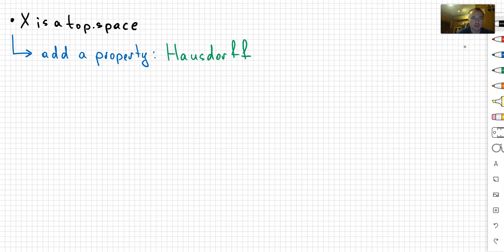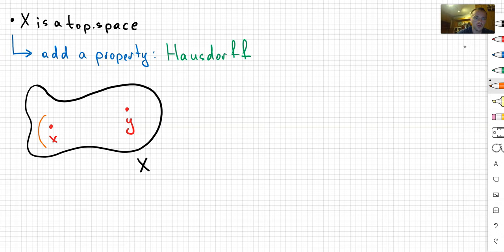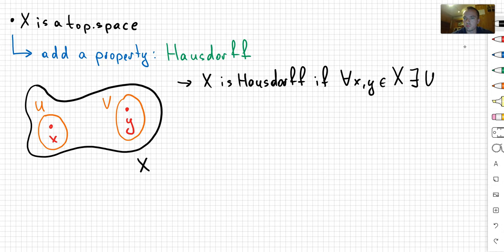That means if I take my topological space X and inside the space I take any random points x and y, then for these random points x and y I can find open sets U that contains x and an open set V that contains y such that U intersection V is non-empty. So in this picture you can see that my open sets don't intersect. In other words, we say that X is Hausdorff if for any x and y in X there exist open sets U and V in my topology such that U contains x and V contains y with the property that U intersection V is empty.